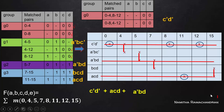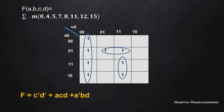We can verify this answer matches the K-map simplification of the same function. The K-map simplification gives exactly the same result as the Quine-McCluskey method. Thank you.